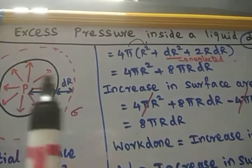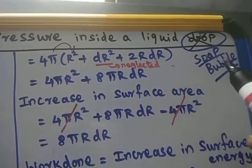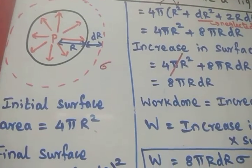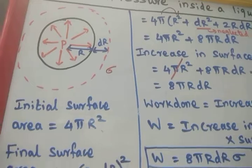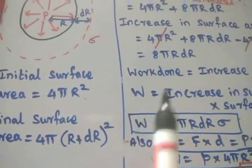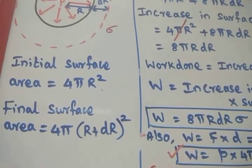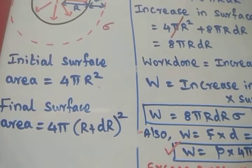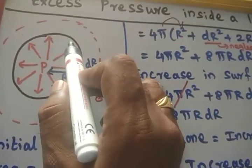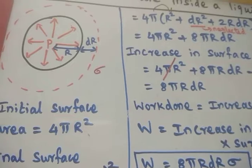Now we are going to find the excess pressure inside a soap bubble using the same procedure followed for the liquid drop. But for a soap bubble, there will be 2 free surfaces, because a soap bubble has air both inside and outside the bubble. So there are 2 free surfaces present.